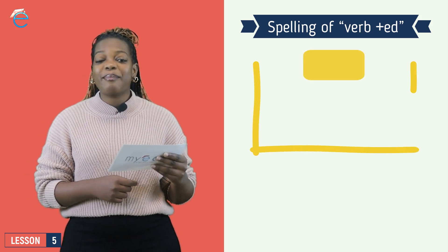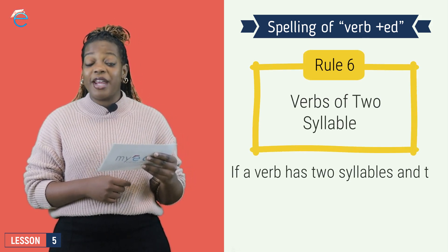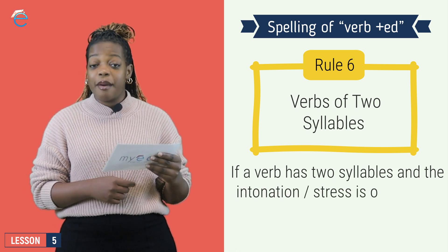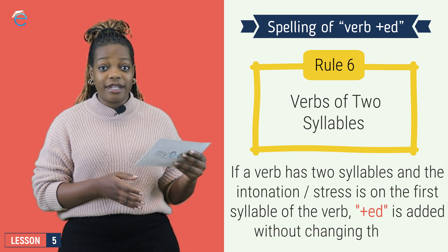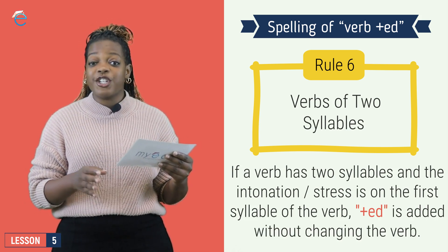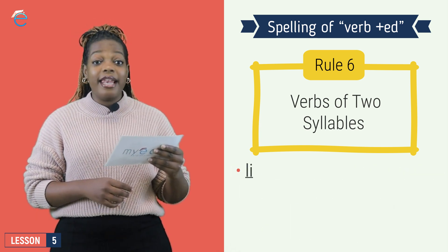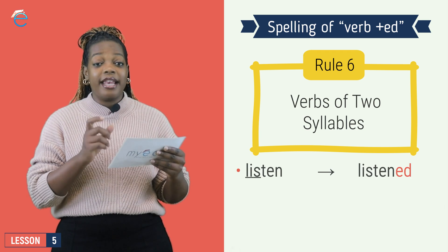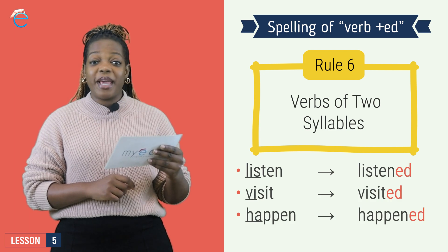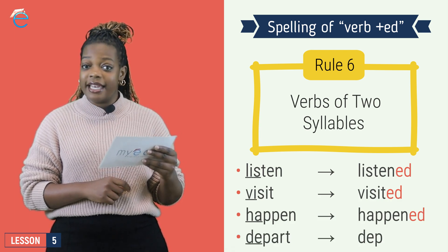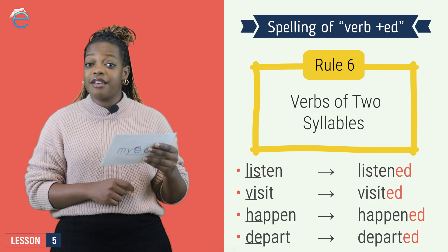Rule number six. If I have a word made of two syllables, but the emphasis, the tone, is on the first syllable, then I change nothing and add ED. Listen, listen, emphasis is on the list, becomes listened, ED.